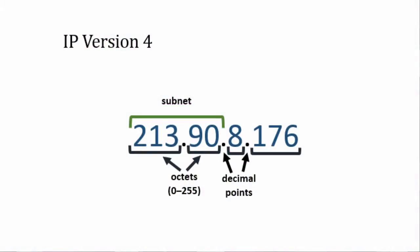There are two important versions of IP: version 4 and version 6. IP version 4 is the most widely used today. Addresses in this version have 4 groups of up to 3 decimal digits. These groups are called octets because they take 8 binary digits to represent. Web servers have IP addresses too.